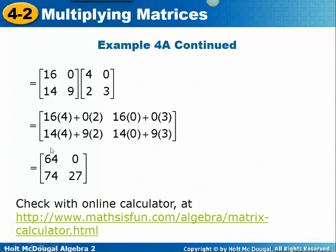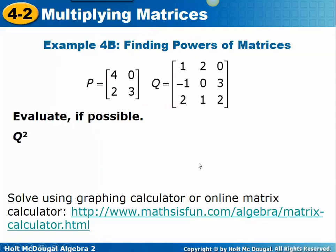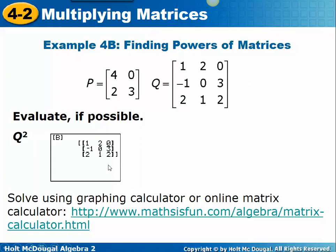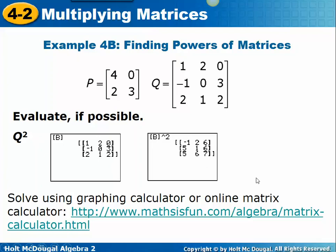The only reason two of these entries appear to be the original values cubed is because of the 0 in the original matrix. If it were not a 0, none of these numbers would be the original values cubed. For the Q squared example with a 3 by 3 matrix, using the matrix calculator you would just enter the 3 by 3 matrix and click the A squared button. On a graphing calculator, you first enter the matrix and give it a name, then perform operations with it.